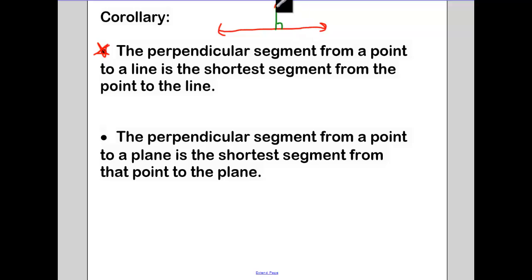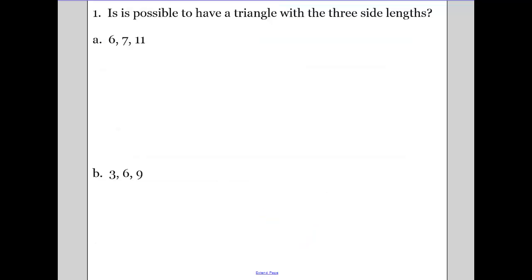Because if you think about it, if you were to draw from the point down to the line, that's the shortest distance. And then the perpendicular segment from a point to a plane, so it's just another way of saying if I had a plane here, and if I drop down my perpendicular to that plane, that's going to be the shortest distance from this point down to our plane.